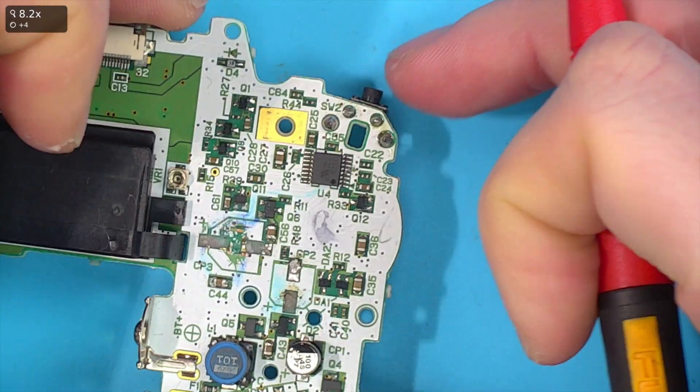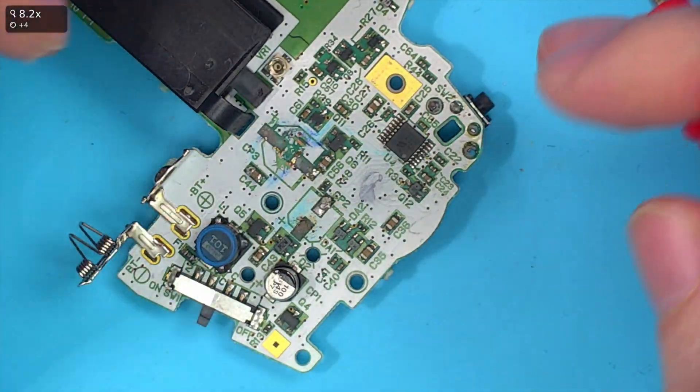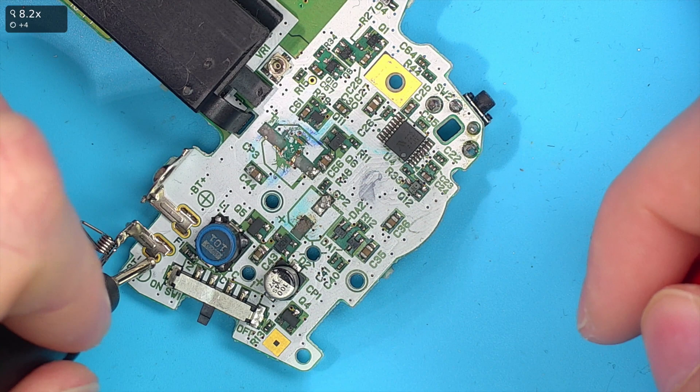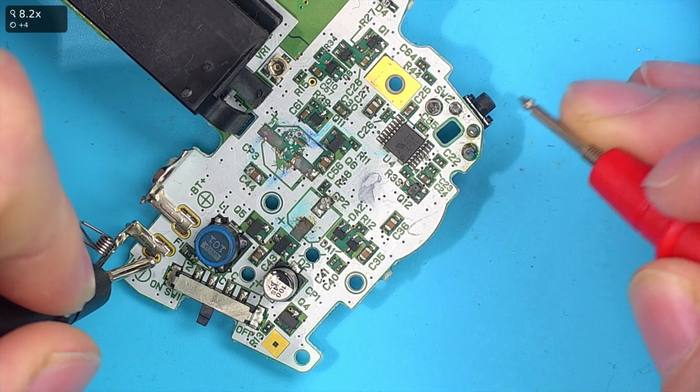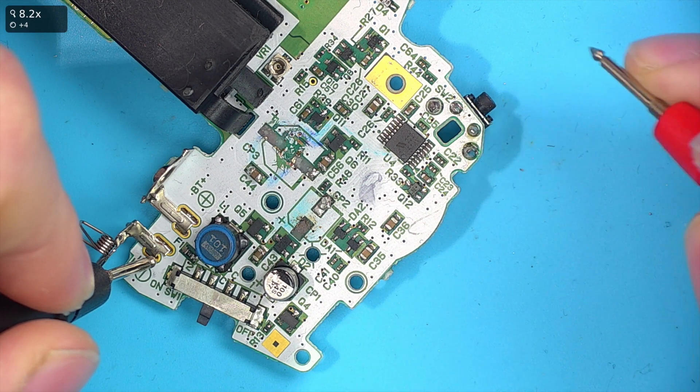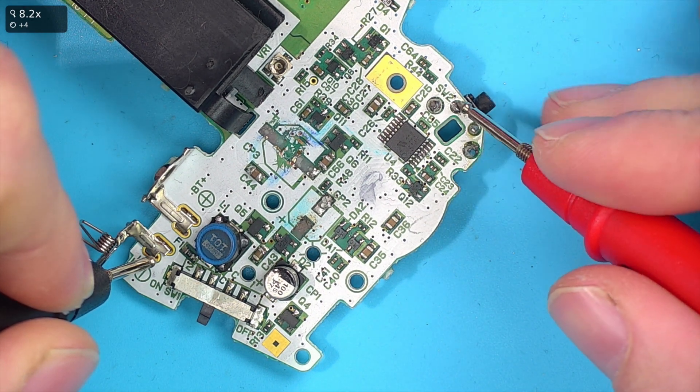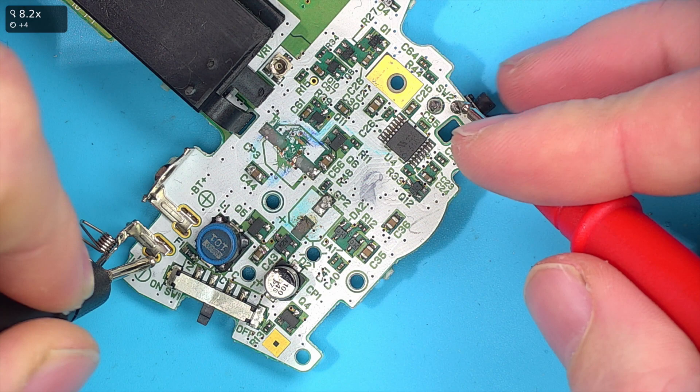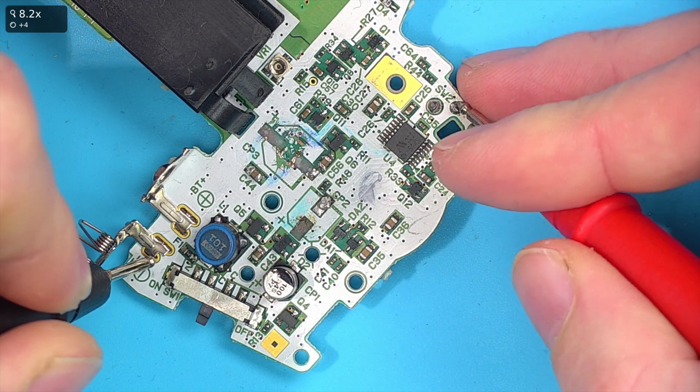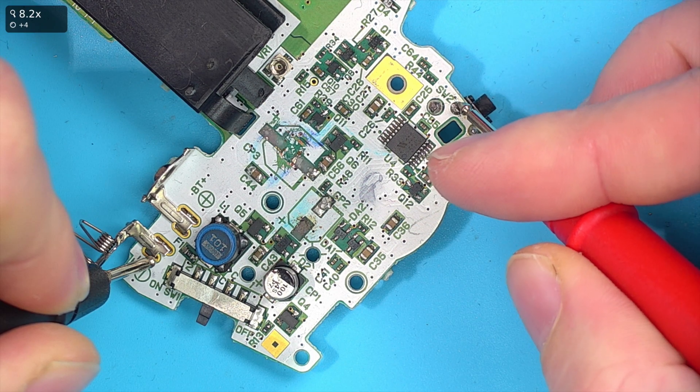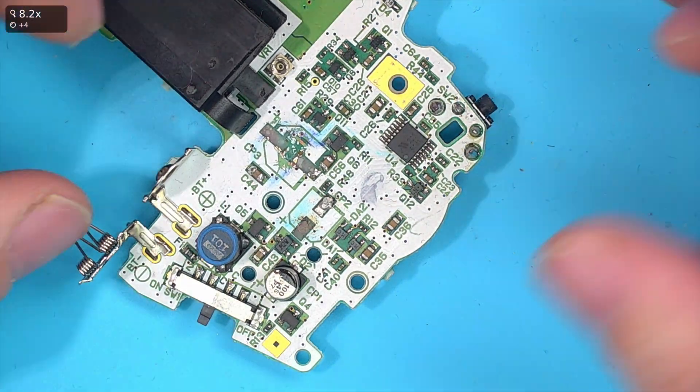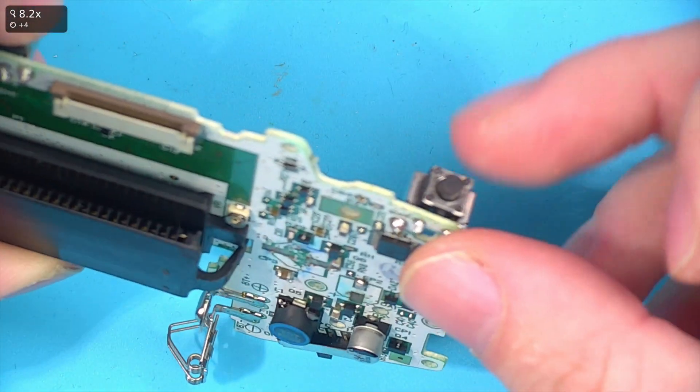So now, if I said, is this trigger, does it have continuity to ground, you'd put one lead on the actual ground, and you'd check whichever side should be ground. And in this case, it's obviously the right side. The left side is the thing that should go to ground when you press the button. So you can see it does when I compress it with one hand. So that's how you'd test, in this case, if that physical switch here is working.